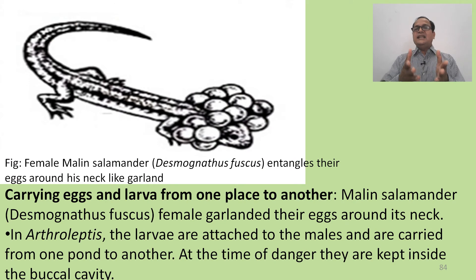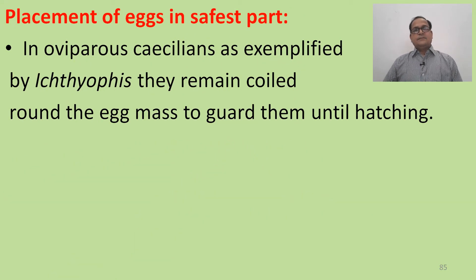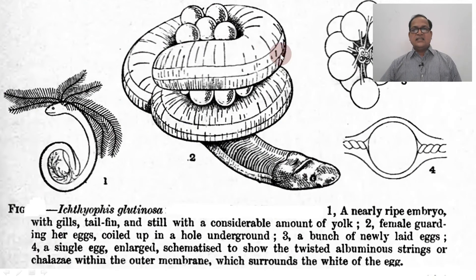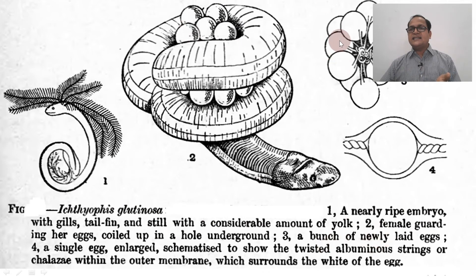A mullein's salamander garlands the eggs around its neck and protects them until they hatch. This is the placement of eggs in a safe part. In oviparous caecilians, as exemplified by Ichthyophis, the female remains coiled around the egg mass to guard them until hatching. There are four figures shown: a ripened embryo, a female guarding the eggs, a bunch of newly hatched eggs, and a single egg with chalaza.